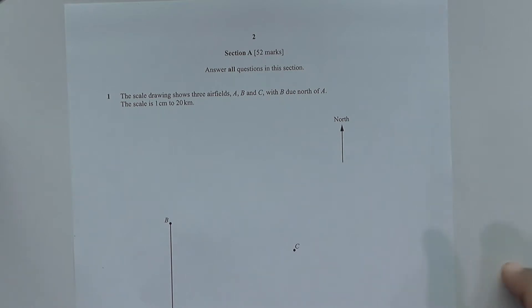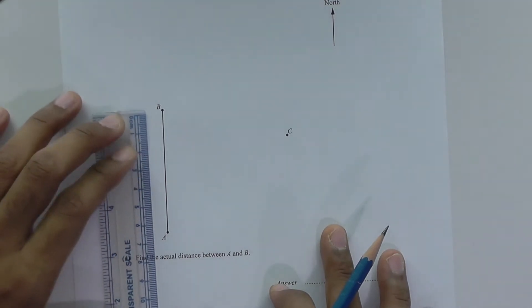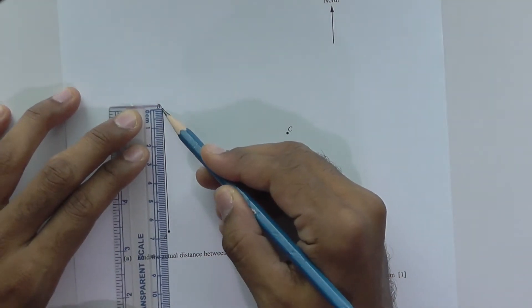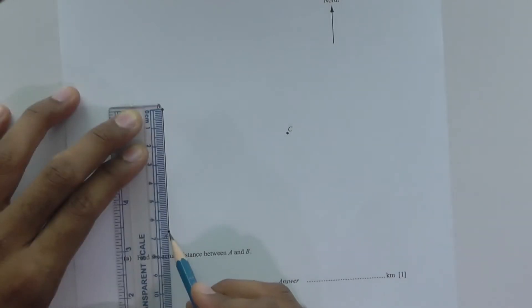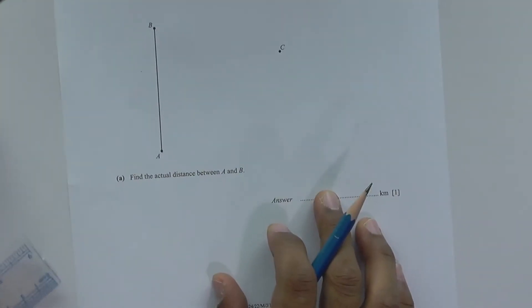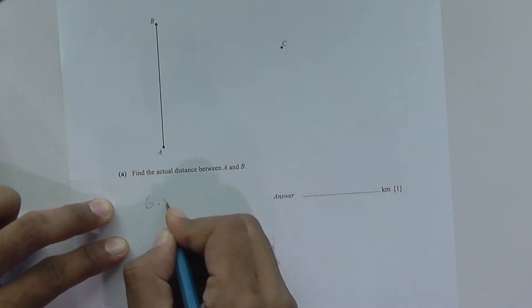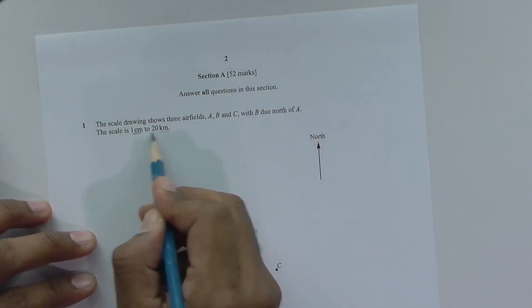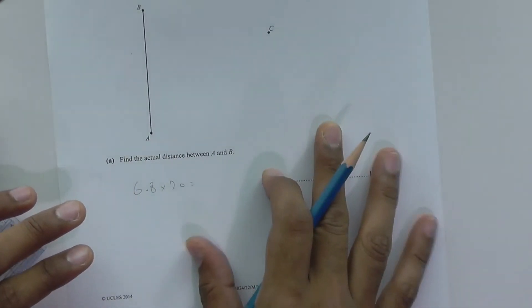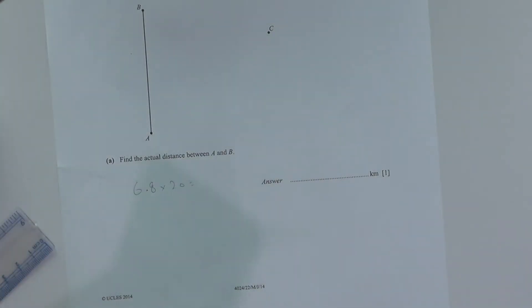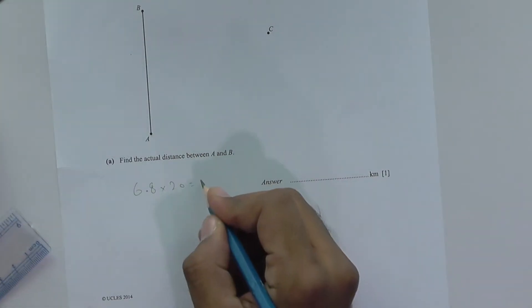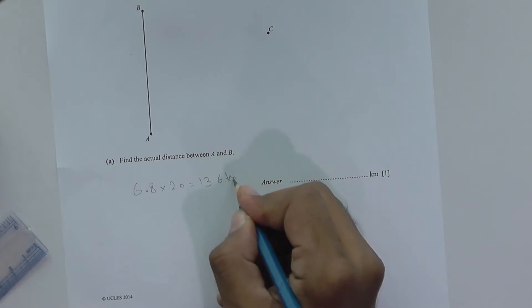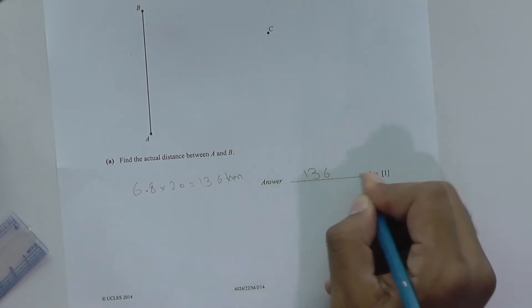Part A says: find the actual distance between A and B. To do that, we need to measure the distance in centimeters — from this point all the way to this point, it is somewhere around 6.7 or 6.8. Let's assume 6.8. We multiply 6.8 by 20 because one centimeter equals 20 kilometers on this scale. Our answer comes out to be 136 kilometers.